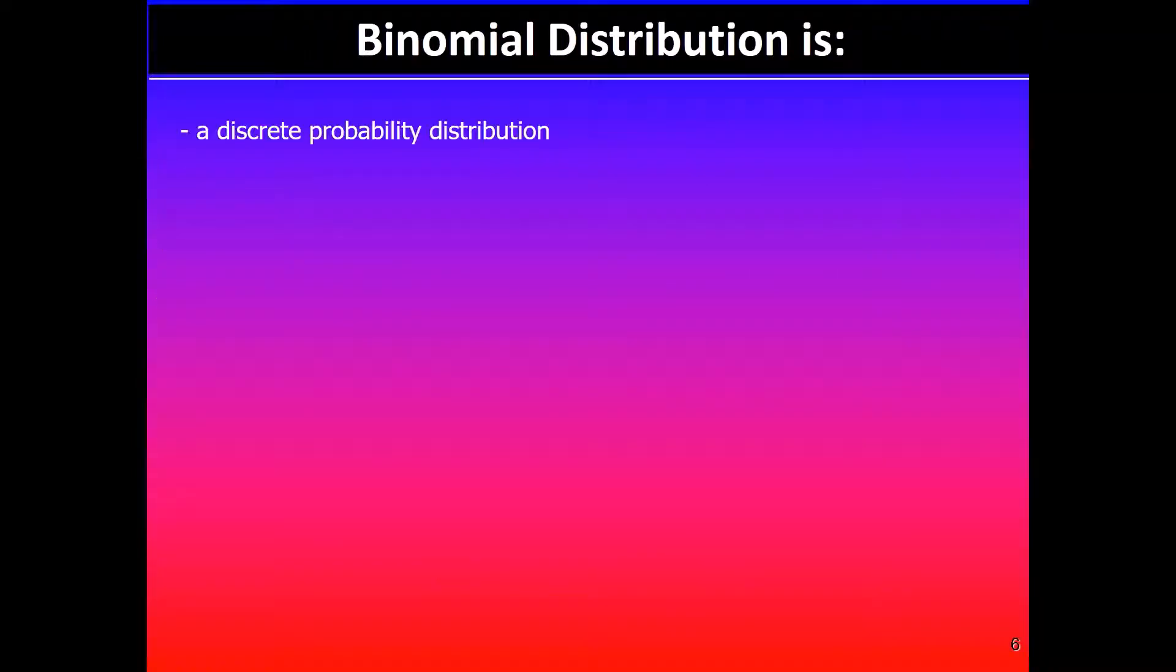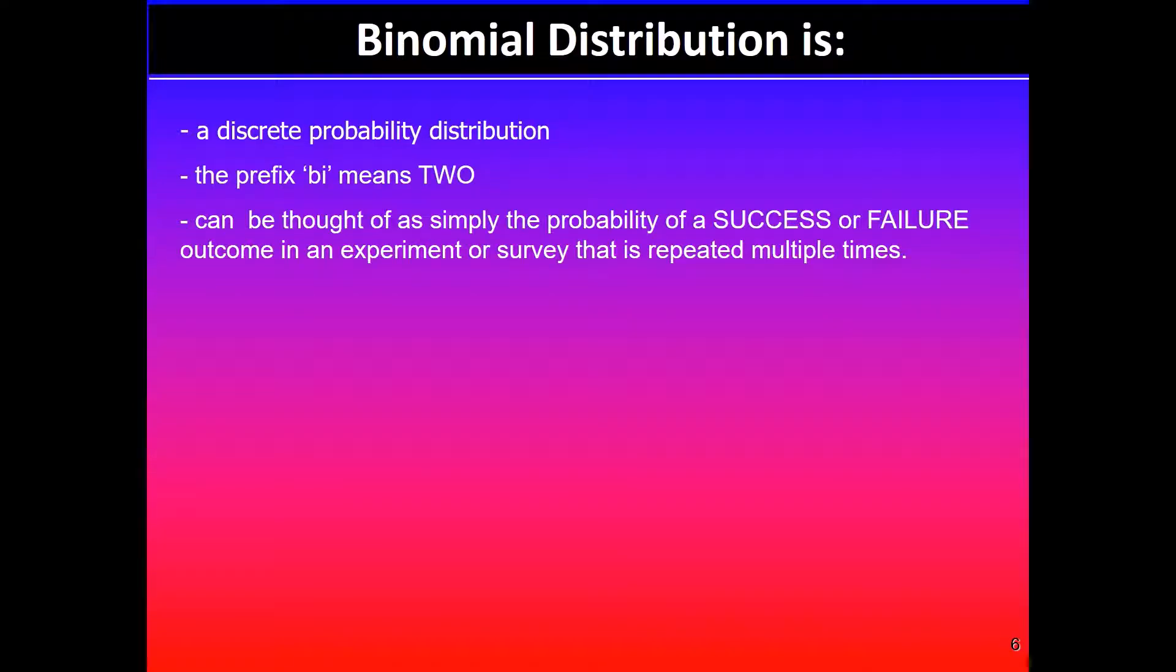Binomial distribution is a discrete probability distribution. The prefix bi means two, which implies two outcomes. In this case we'll be simply looking at the probability of a success or failure as the two outcomes. In general, if you're given number of trials and probability of success in each trial,